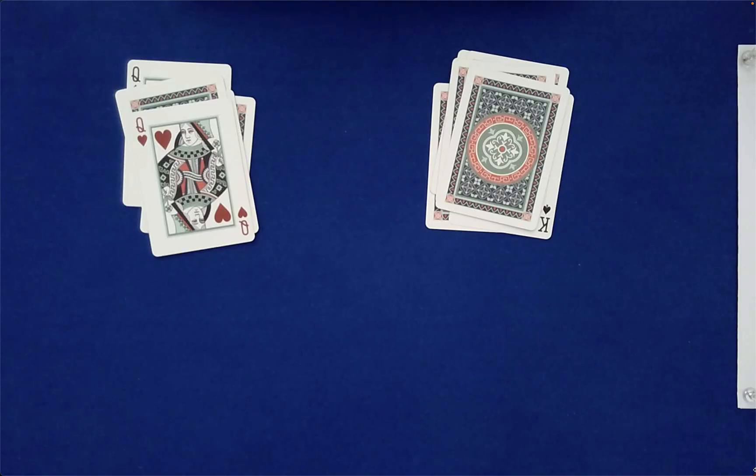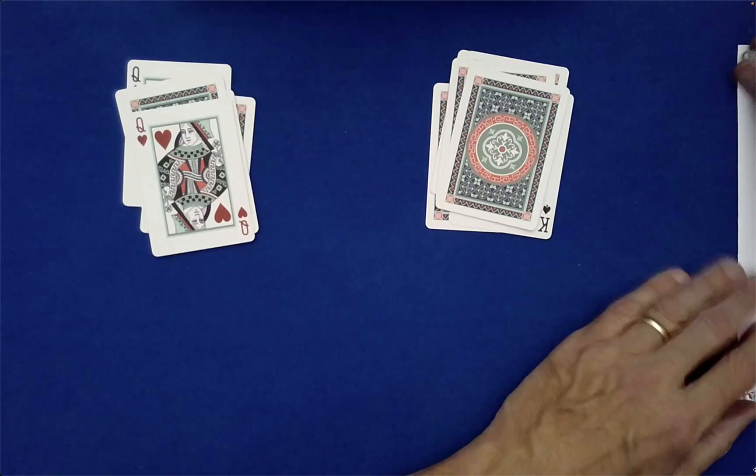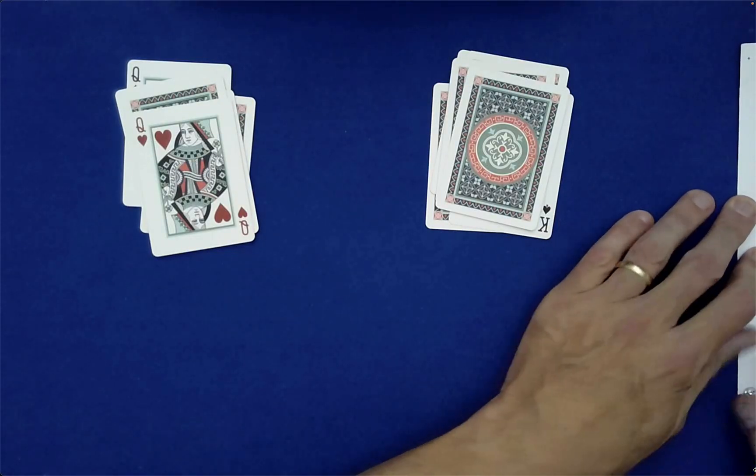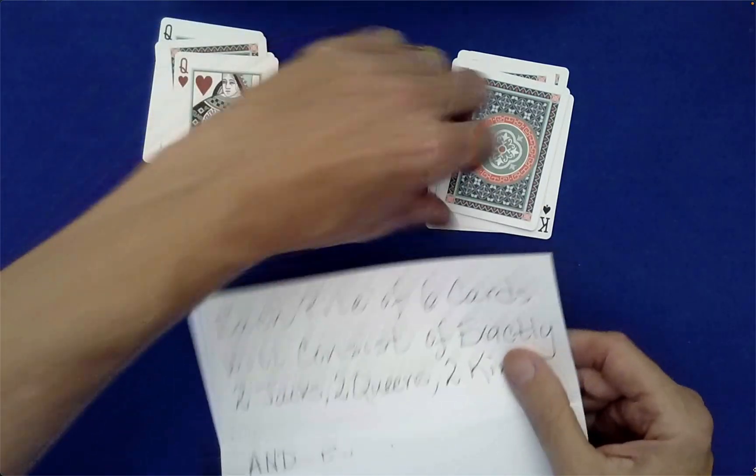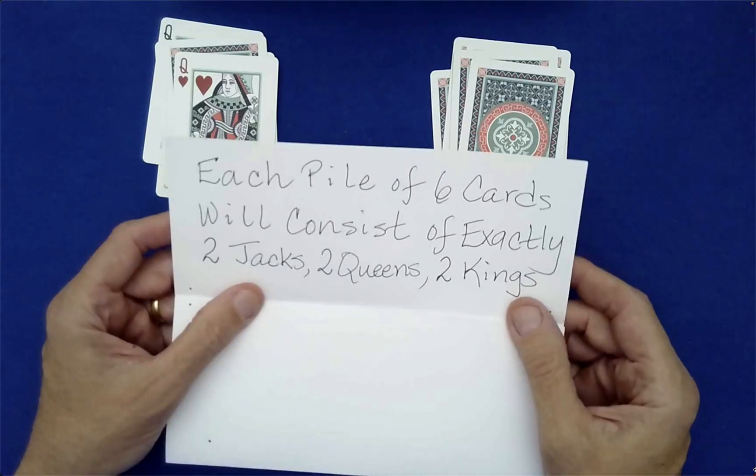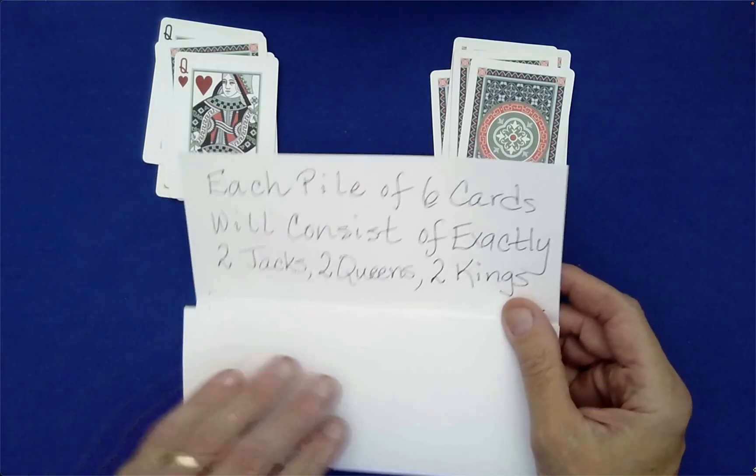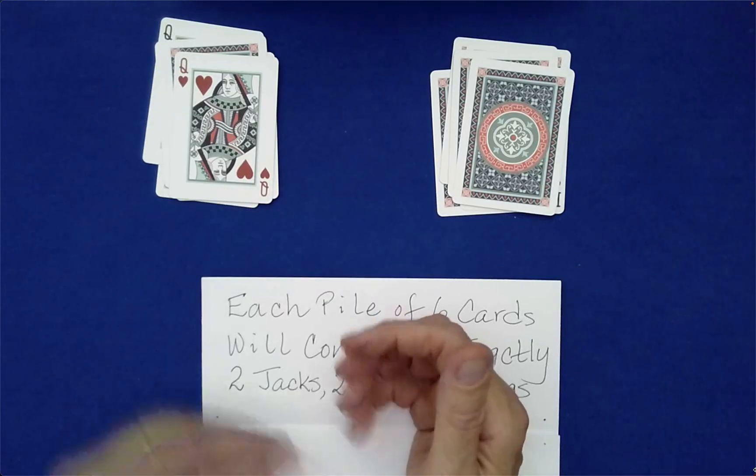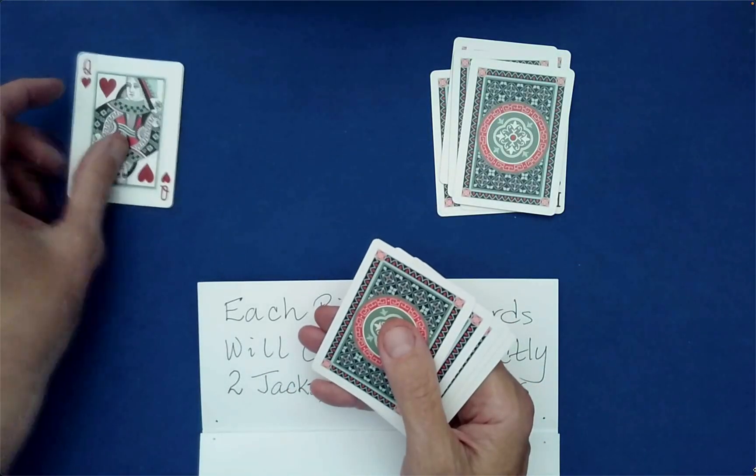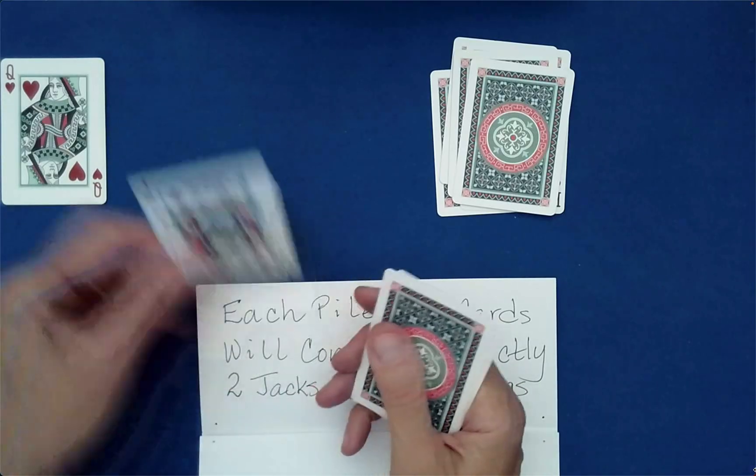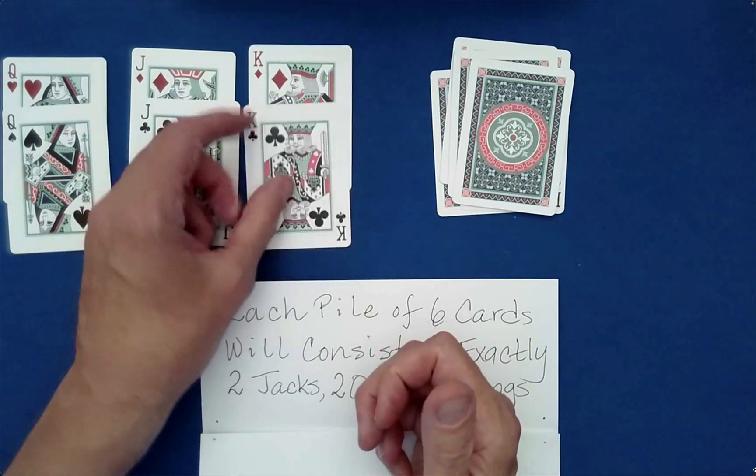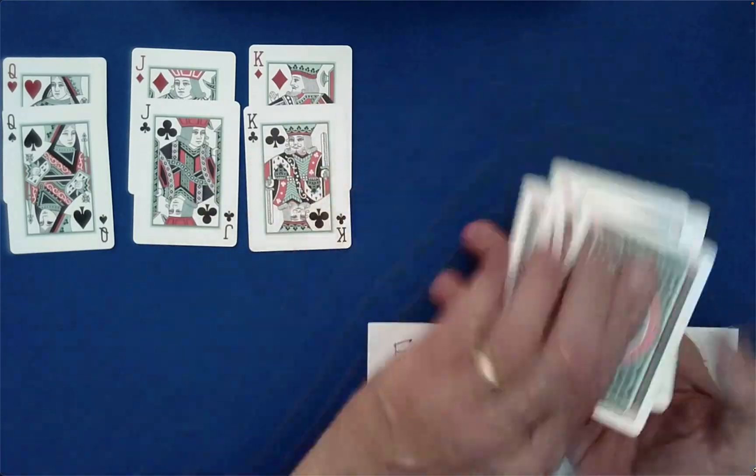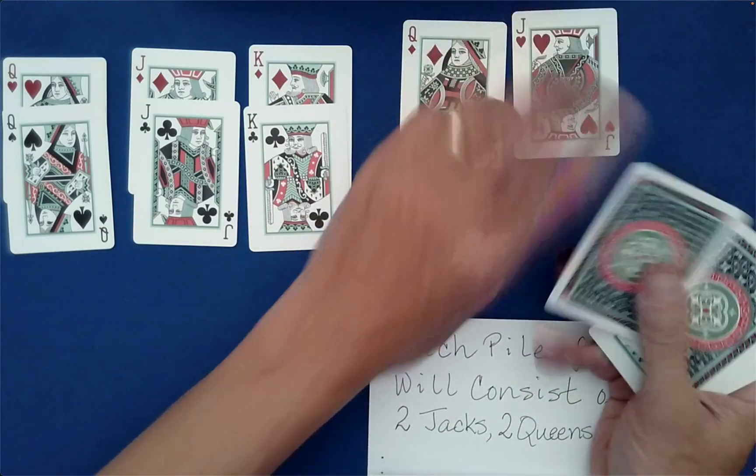Oh yeah, I forgot. Off to the side here, just so I have a record of it, I have a written prediction. Let's take a look at that. What does the written prediction say? Each pile of six cards will consist of exactly two jacks, two queens, and two kings. Is that true? There's one queen, there's a jack, another jack, a king, a queen, another king. Check that out! How in the world were we able to do that?